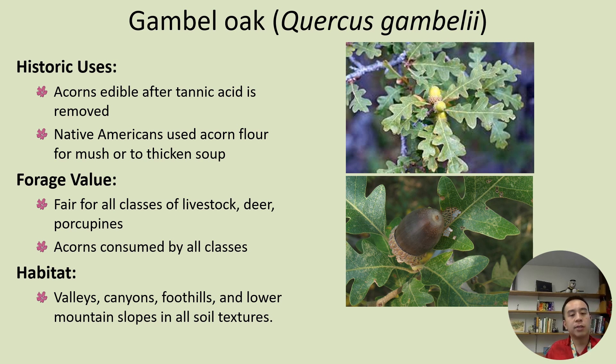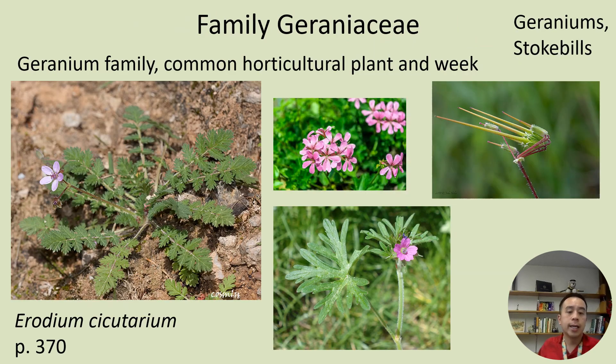In terms of forage, it's relatively fair or intermediate in forage value for pretty much all livestock classes, including deer and other wildlife like porcupine. The acorns themselves are consumed by all livestock classes. In terms of habitat, they often occur in valleys, canyons, foothills, and lower mountain slopes and can handle all kinds of soil textures.